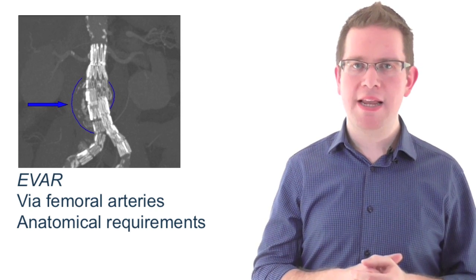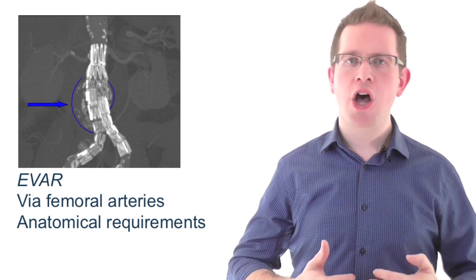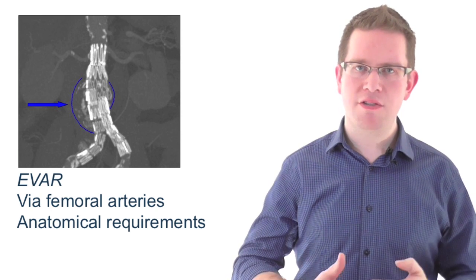For example, there needs to be a sealing zone at the top end of the graft below the renal arteries and suitably straight arterial access through the iliac system.